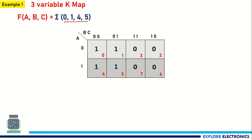Now I need to look for which adjacent cells have value 1. Here 1 and 1 are adjacent cells, and this one is also an adjacent cell. Cells 4 and 1 are adjacent cells, and all four have value 1. So I can group them together. Once we group this together, I need to write the logical expression for this group.